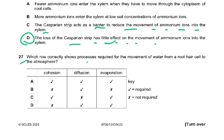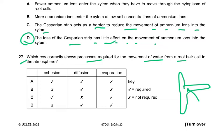Question 27. Which row correctly shows processes required for the movement of water from a root hair cell to the atmosphere? So we are looking at cohesion, diffusion, and evaporation.